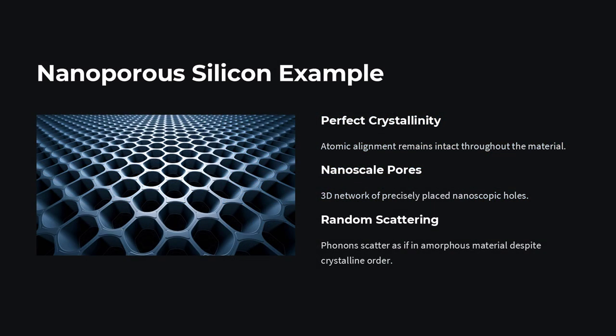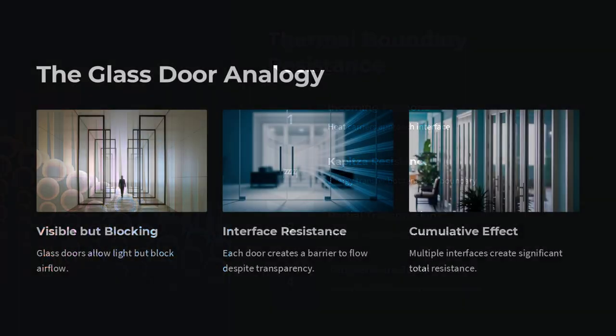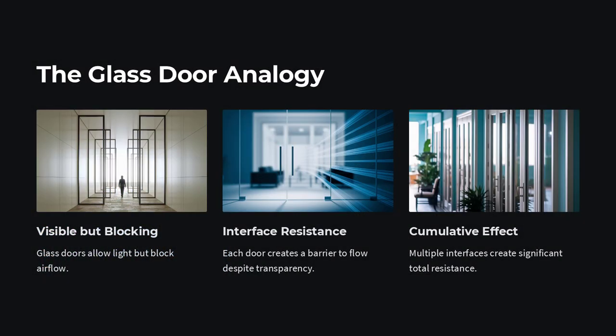One striking example is nanostructured silicon, which is normally an excellent thermal conductor. But when silicon is made into nanowires, superlattices, or thin films with embedded nanoparticles, its thermal conductivity can plummet by more than an order of magnitude, even though the crystal lattice remains largely intact.